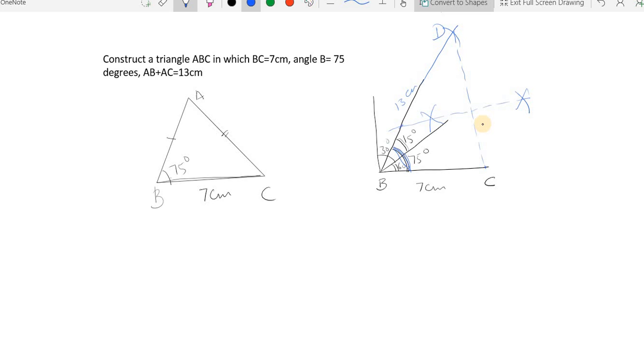So this particular point where it meets would be A. And now connect A and C. Now AB plus AC would be 13, should be 13. How am I sure that it is 13?